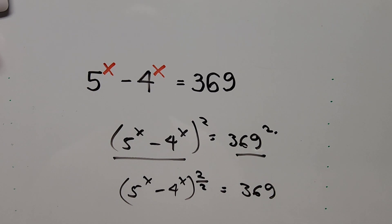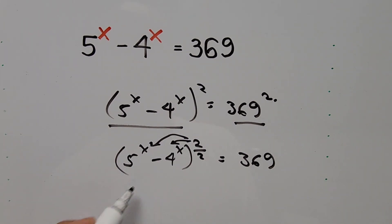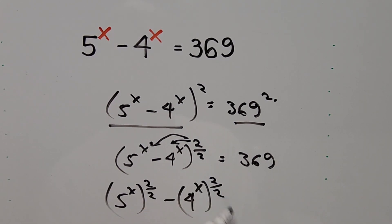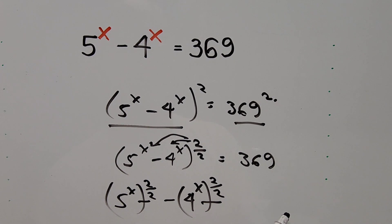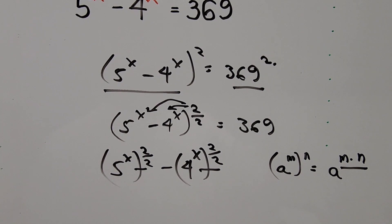Let's distribute this exponent to both terms: 5 to the power of x raised to exponent 2 over 2, and the same for the next term. We'll be using the exponent rule that says: base a to exponent m, raised to exponent n, equals a to the exponent m times n. So we're multiplying the exponents and can manipulate them this way.